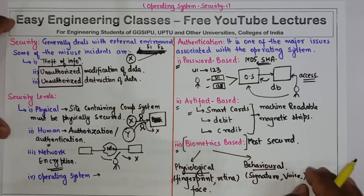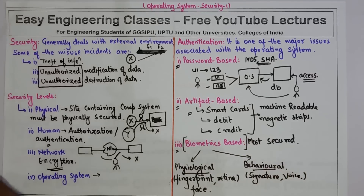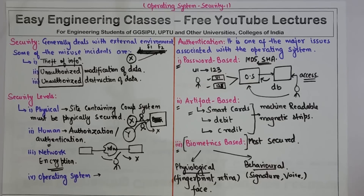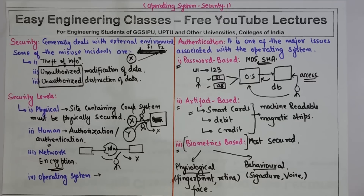This is the first video lecture on security of operating systems, in which we have seen security levels and different kinds of authentication. In the next video we are going to see about threats — there are two different kinds: program threats and system threats. Thank you for watching the video. Please subscribe to my YouTube channel for more such tutorials.